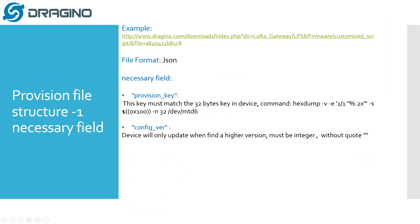Here is the provision file structure. You can find example files in the provided location. The provision file must be in JSON format and includes two necessary fields. The first field is the provision key, which must match the 32-character key in the device. You can use specific commands on your gateway to check what key you have, or if you order gateways in large volume, you can ask Jogeno to provide the keys to you.